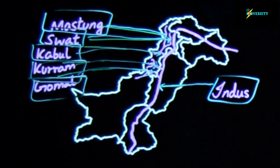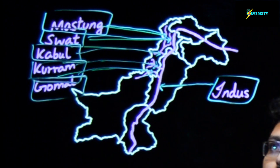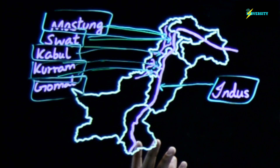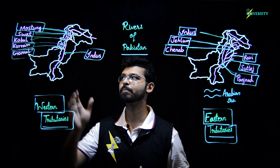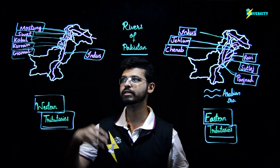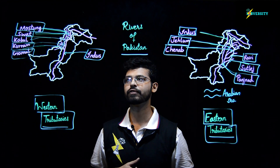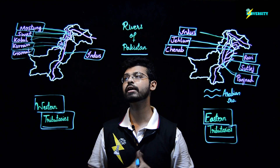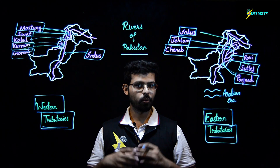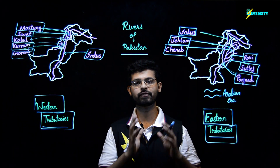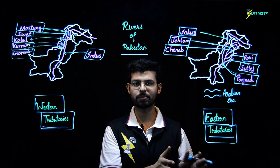Compared to the eastern tributaries, the western tributaries cover a much smaller area and do not have much volume of water. River Swat and Kabul have more volume compared to the other western tributaries. Overall, these rivers are short, not very wide, and cover a very small area.